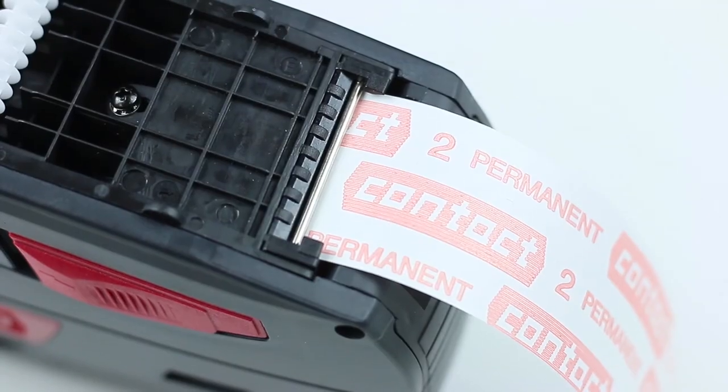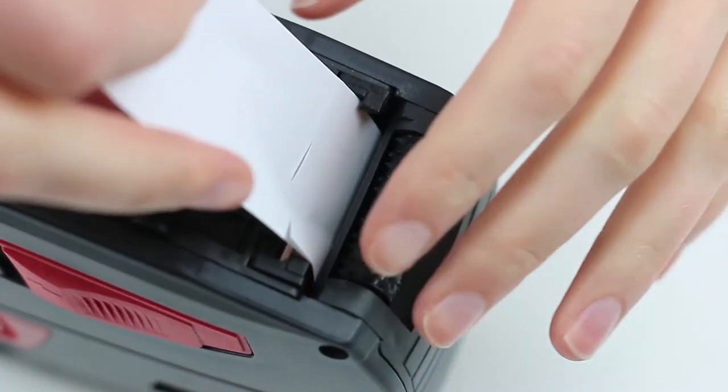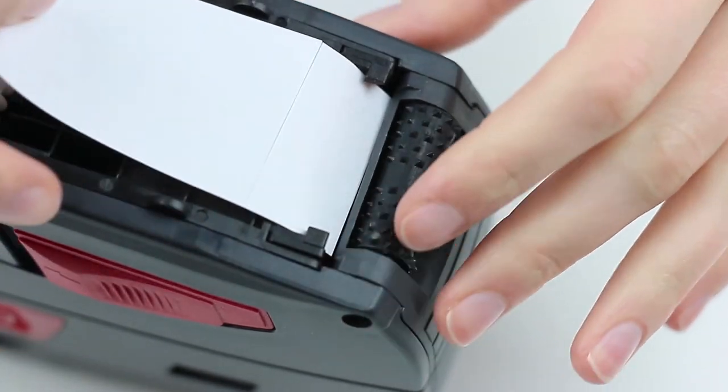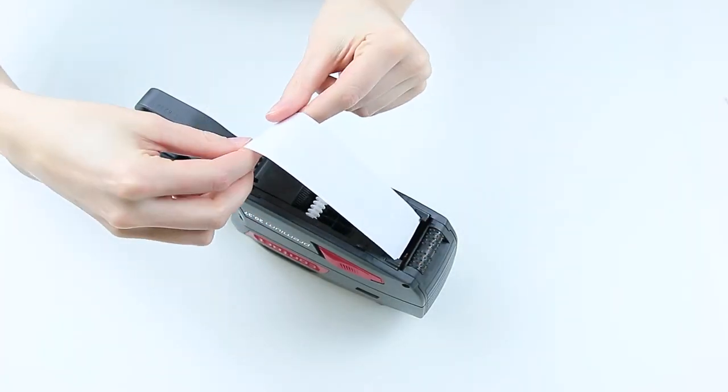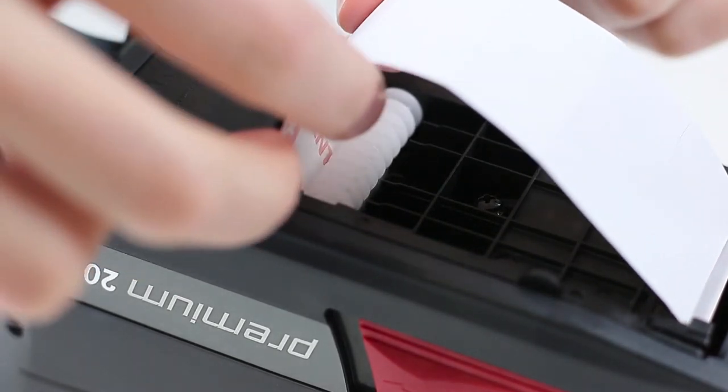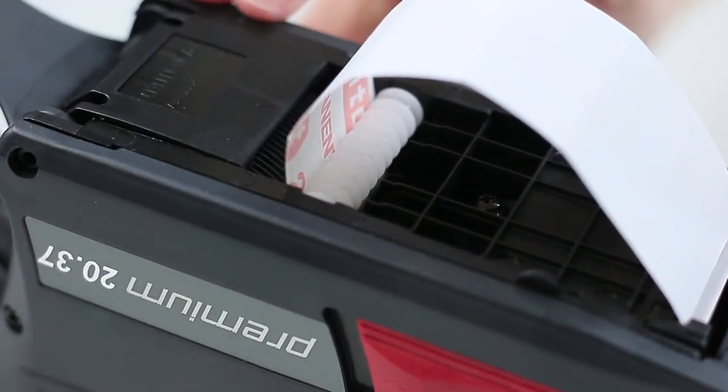Now, feed the label material along the expanding edge. Before you feed the material, please take care that it is threaded up behind the guiding pin. Then, insert the material between the wide guide pulley and the transport wheel.